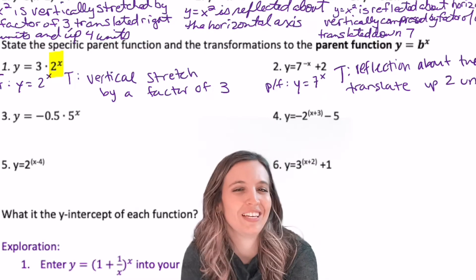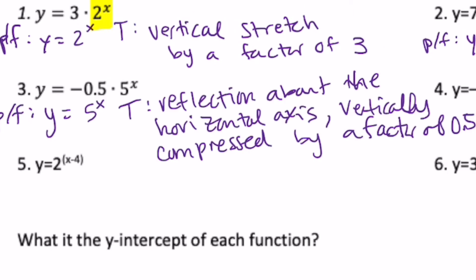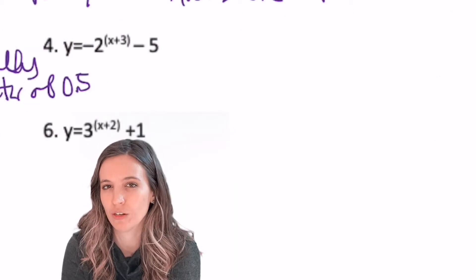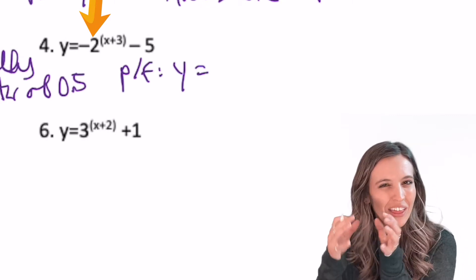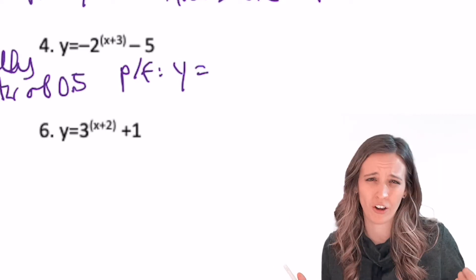All right, we know these. Go try 3. Let's stick together on 4. What would that parent function be? Well, it looks like that base is negative 2, but we know that just 2 is being taken to that power, so that negative is separate and part of the transformations.